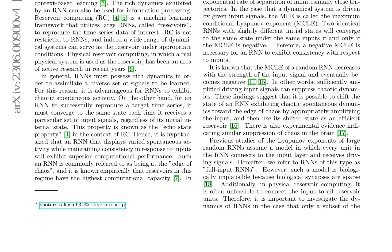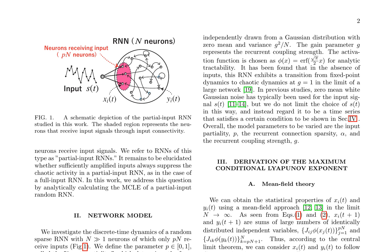Previous studies' assumption of full input RNNs is limited, emphasizing the importance of investigating sparse input RNNs, as seen in biological and physical systems. In this paper, the authors delve into a partial input RNN model where only a fraction of neurons receive input signals. They employ a mean field approach to analyze the network's dynamics.